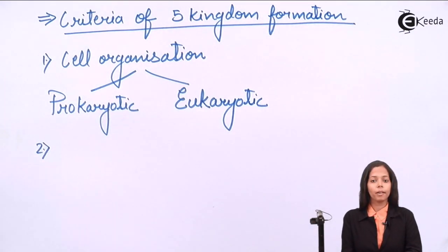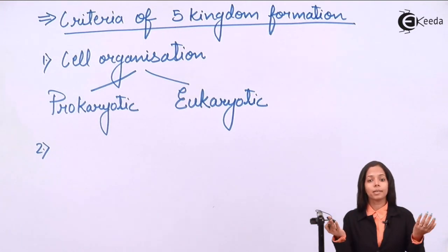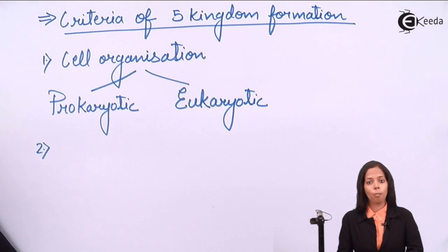Next he went to body level. After cellular organization, he explained the second criteria, that is body organization. Obviously body is made up of cells, but the body can be divided into two types on the basis of number of cells present. If there is one cell present, then it is called a unicellular organism. When there are many cells present, then the body is called a multicellular body.